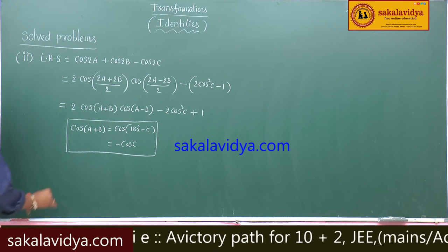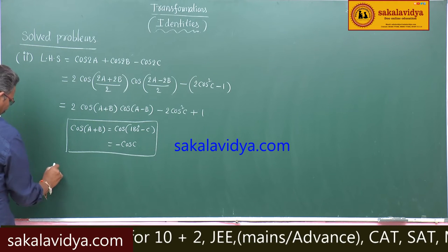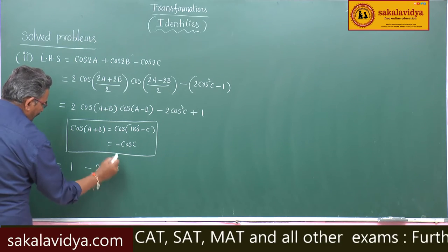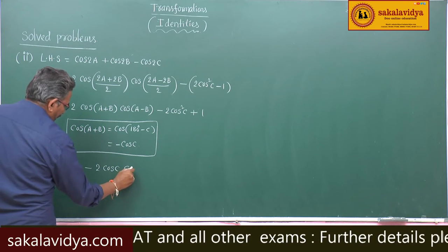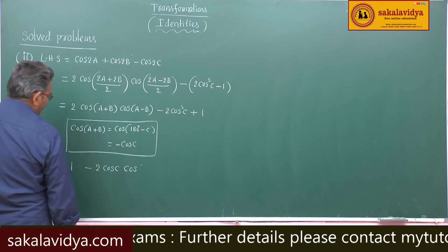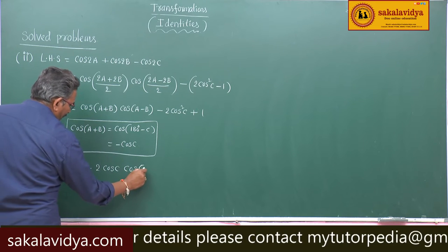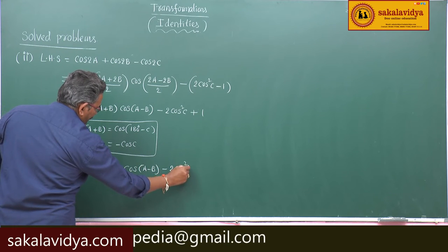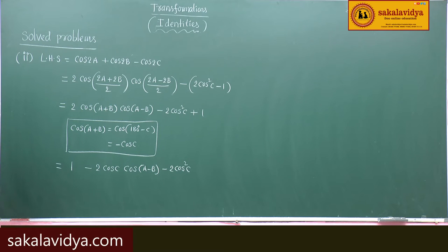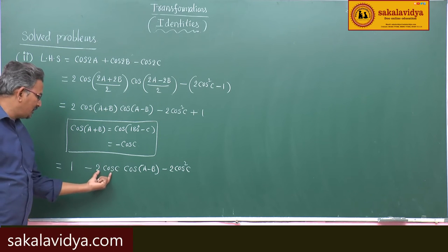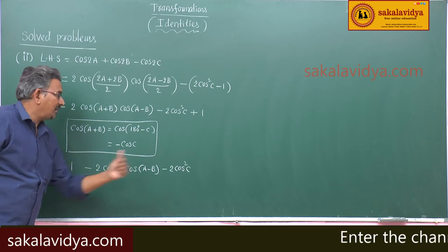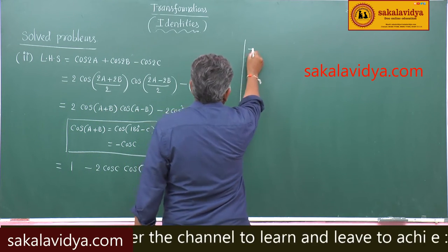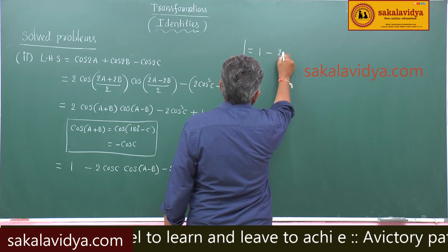So this can be written as 1 minus 2cosC·cos(A+B), plus cos(A−B) minus 2cos²C. Now take minus 2cosC common from the second and third terms. This can be written as 1 minus 2cosC common.